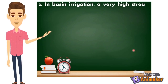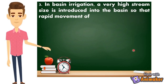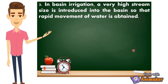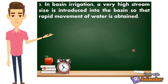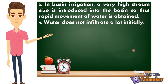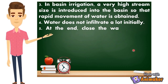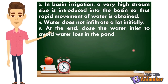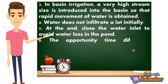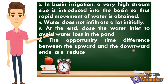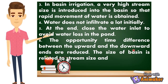In basin irrigation, a very high stream size is introduced into the basin so that rapid movement of water is obtained — mabilis yung stream or pag-agos ng tubig para mabilis nating mapatubigan yung ating mga halaman. Water does not infiltrate a lot initially. At the end, close the water inlet to avoid water loss — kailangan nating takpan yung mga butas sa ating farm. The opportunity time difference between upward and downward ends are reduced; the size of the basin is related to stream size and soil type.